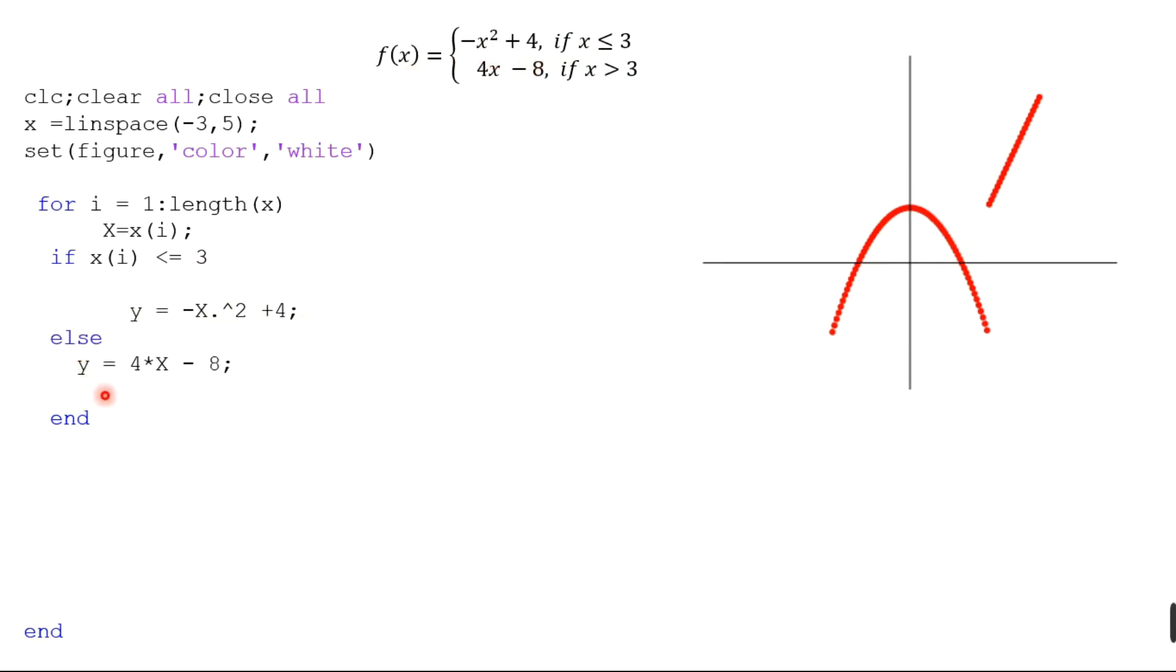We use capital X, and next we use the hold command to plot multiple graphs. This is the command for axis: to plot axis, we set the x-axis and y-axis. Here we use x-axis from minus 10 to 10 and the limit of y-axis is minus 10 to 20.